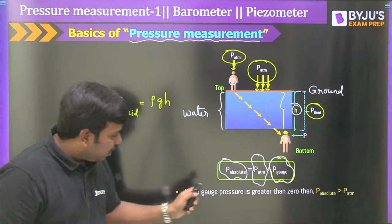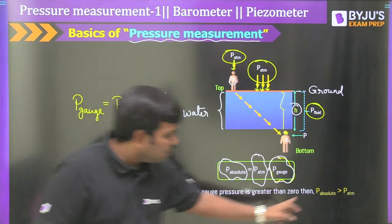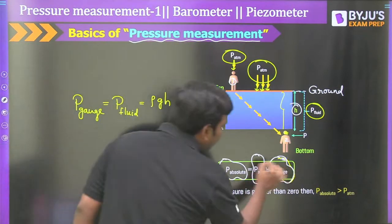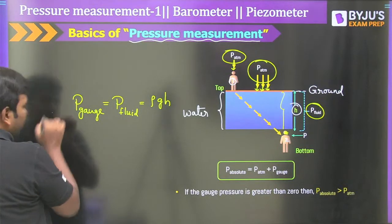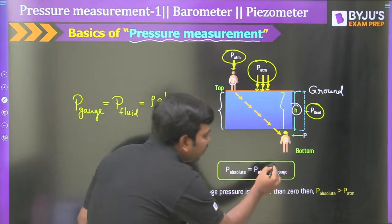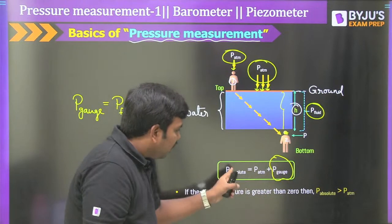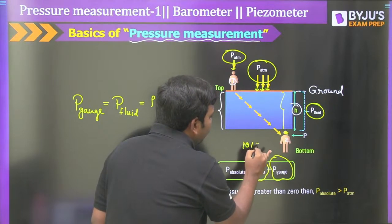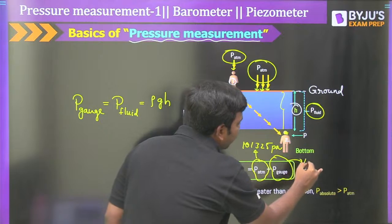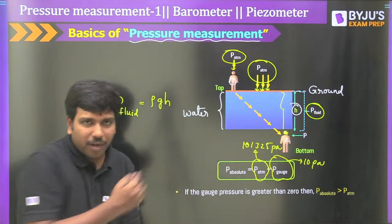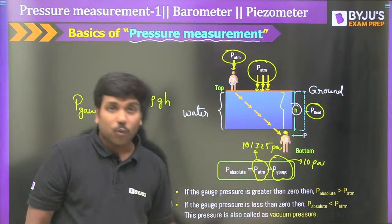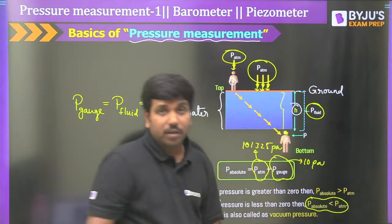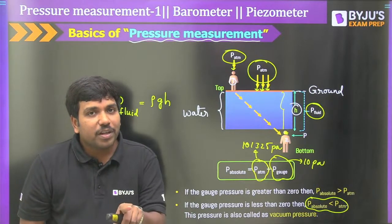If gauge pressure is greater than zero, then absolute pressure is greater than atmospheric pressure. If gauge pressure is negative, then absolute pressure will be less than atmospheric pressure. This is very important — I have seen ISRO interview questions on this topic. When is it possible that absolute pressure is less than atmospheric pressure? Answer: when gauge pressure is a negative quantity.